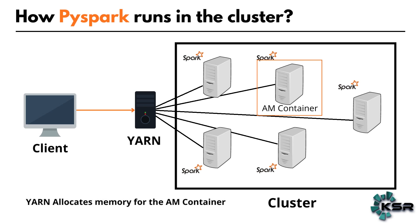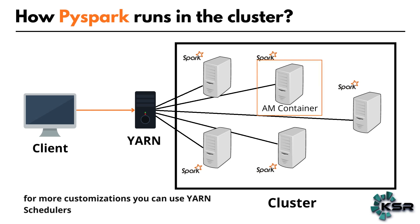There are some YARN scheduler configuration properties on the YARN side. PySpark itself will analyze the execution plan and determine how much configuration is required. If you want to update or customize that configuration, you can use the YARN scheduler configuration properties and modify them. Based on this, YARN allocates memory to the AM container.